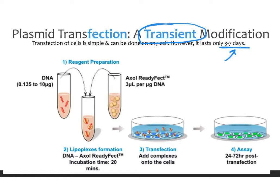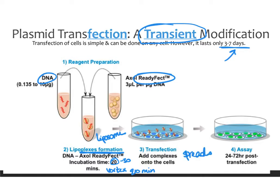For transfection, you first prepare your reagents — a mix of your plasmid DNA and some sort of transfection reagent. This creates a lipoplex or liposome formation, which allows the plasmid to get into the cells. Incubate this for about 20 to 30 minutes with consistent vortexing — approximately every 10 minutes. Then drop it onto the cells in a drop-wise manner so it spreads across the entire plate. Drop it onto the existing media — you don't remove the media, you just add this complex on top. Check the protocol for exact amounts specific to whatever transfection reagent you're using.